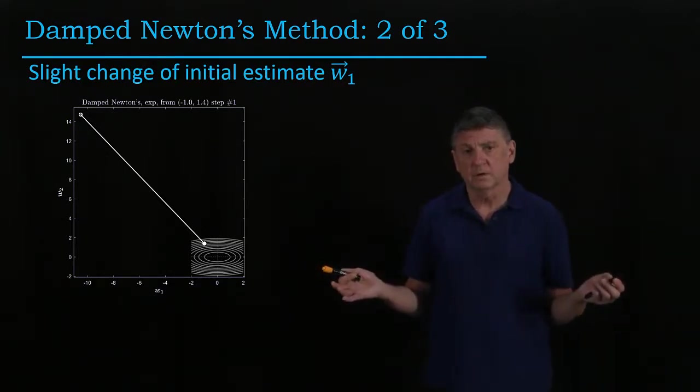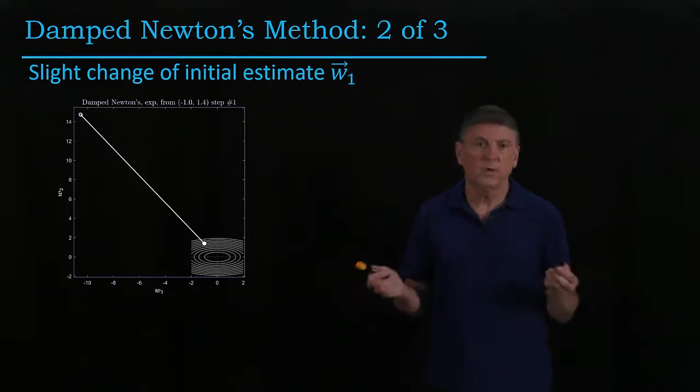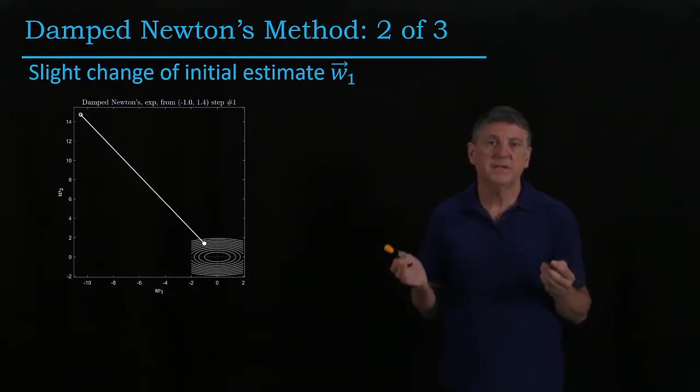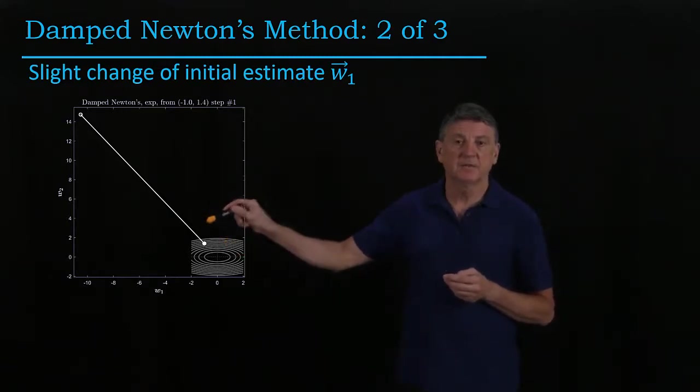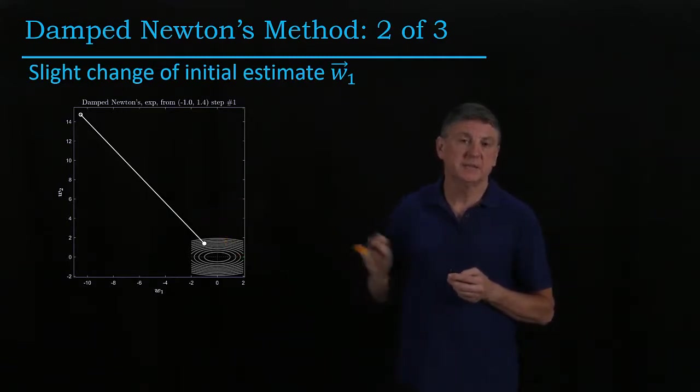What went wrong? Well, what went wrong is we have to take a look at those assumptions that we made. Let's take a look at the function near this estimate.